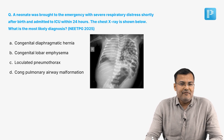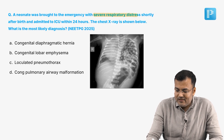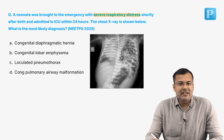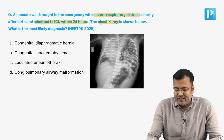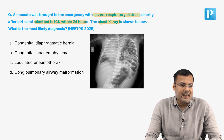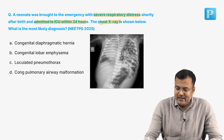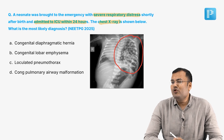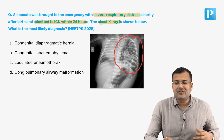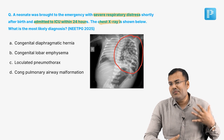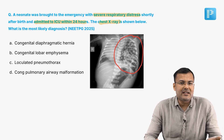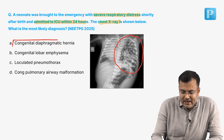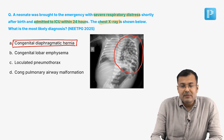This question is taken from NEET PG 2025. A neonate was brought to the emergency with severe respiratory distress shortly after birth and admitted to ICU within 24 hours. On the chest x-ray, you can see multiple bowel loops. A newborn with respiratory distress and multiple bowel loops in the left hemithorax — this is a classical case of congenital diaphragmatic hernia. The most common type is Bochdalek hernia.